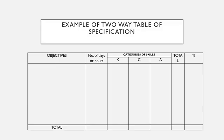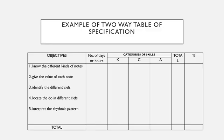For this example, we have knowledge, comprehension, and application. Then the next column we have the total — the total number of items for each objective or content. Then we have the percentage of items for each objective or content. The objectives for this example are: to know the different kinds of notes, give the value of each note, identify the different clefs, locate the notes in different clefs, and interpret the rhythmic pattern.